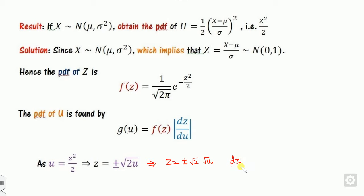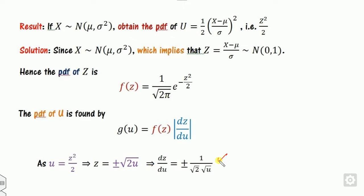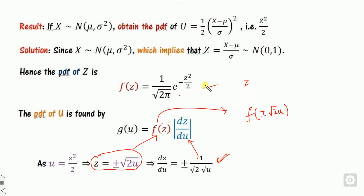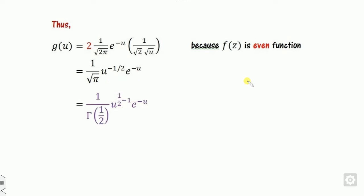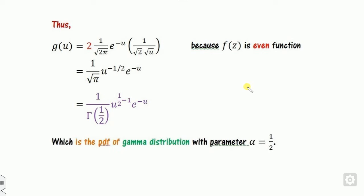From z equals plus or minus root(2u), we find dz/du equals plus or minus 1 divided by root(2u). Substituting into g(u) = f(z)|dz/du|, we take both the plus and minus cases. Since f(z) is an even function, the two contributions are equal, so we take twice the positive case. After simplification, the square root terms cancel.